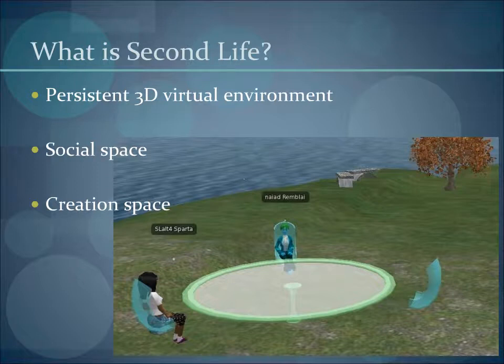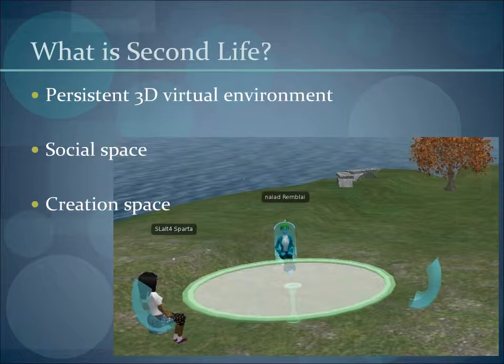I've included the image of two avatars interacting in the world so you can get a better idea of this. The environment is, above all, a social space. In it, you can interact with others via your avatar, the character that represents you in World. For example, Nyad Rembley is the avatar that represents me and is the character you will interact with when communicating and collaborating with me in World. In this image, Nyad is the one at the far side of the table and she is interacting with another avatar sitting at the left side of the table.